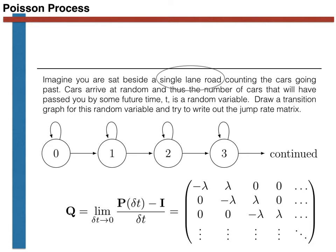We have now introduced the conceptual framework for the Poisson process and discussed the assumptions that underlie this probabilistic model. A Poisson process can be used to model the number of events that have occurred by a time t. When using this model we must assume that events are equally likely to happen at all points in time — there are no periods during which events are more likely to occur. We also assume that individual events are uncorrelated: the occurrence of one event does not make subsequent events more likely. With this framework in place, let's solve the Kolmogorov equation to get an expression for the probability that different numbers of events will have occurred.